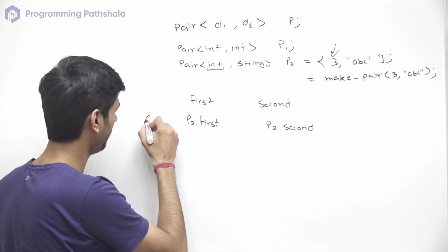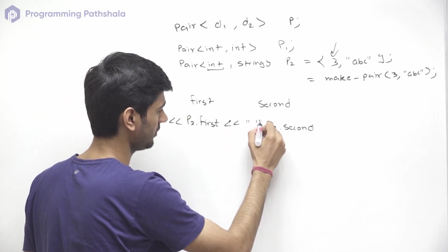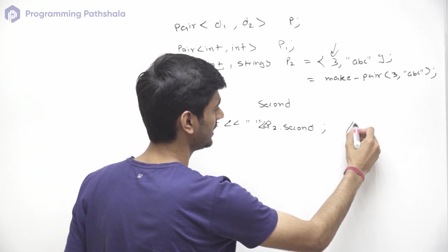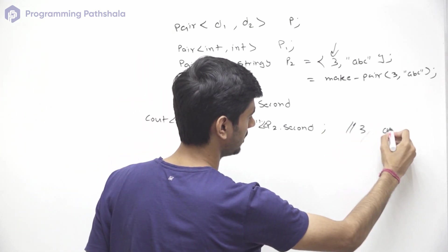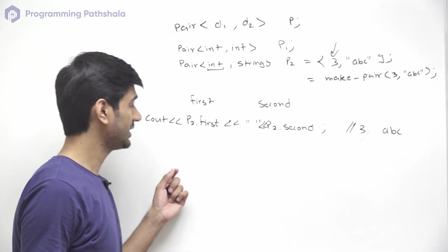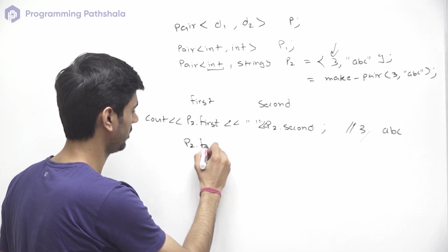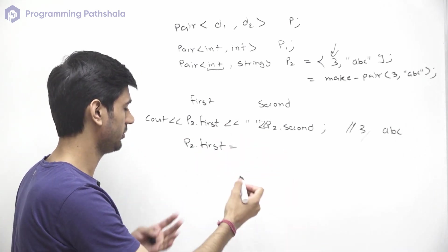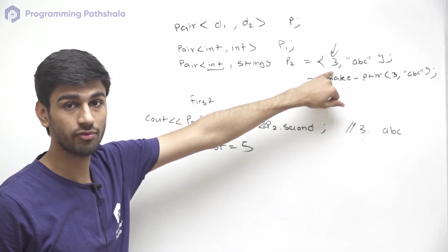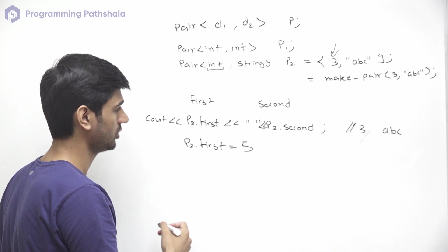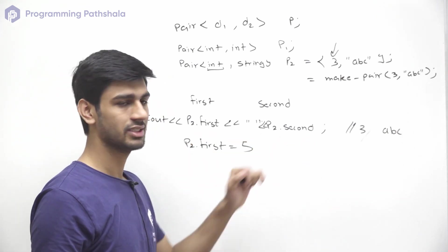If we print P2.first and P2.second it will print '3 abc'. If we want to update the value at the first object we can do that using p2.first = 5, so now p2 will have the value 5 at the first object instead of 3. We can update or fetch values using the first or second keywords.